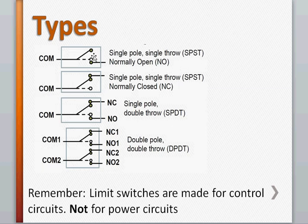The first one here shows a single pole single throw switch with only one contact that is normally open. The second one is a single pole single throw and is normally closed contact. The third one has two contacts available, normally open and normally closed, and it is a single pole double throw switch.